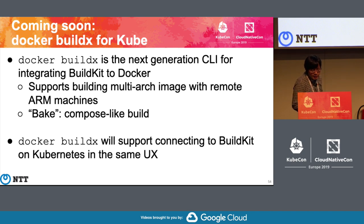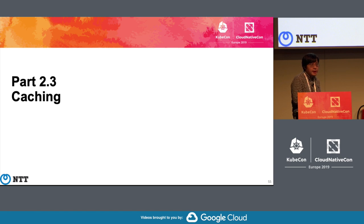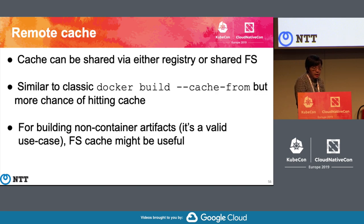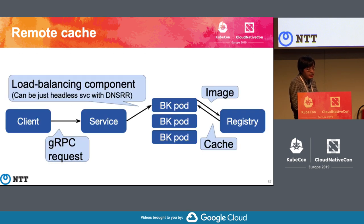We also plan to add Kubernetes support for Docker BuildX — the next-generation CLI for integrating BuildKit with Docker. It has interesting features like building multi-architecture images with remote machines and a new concept similar to Docker Compose build. Docker BuildX will support connecting to BuildKit daemons running on Kubernetes with the same UX as Docker.